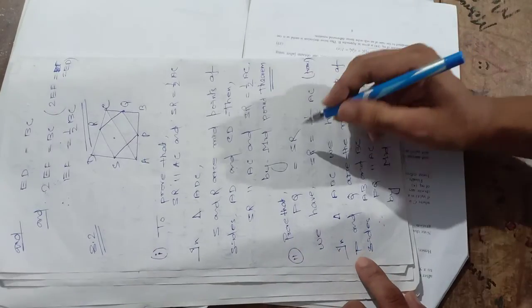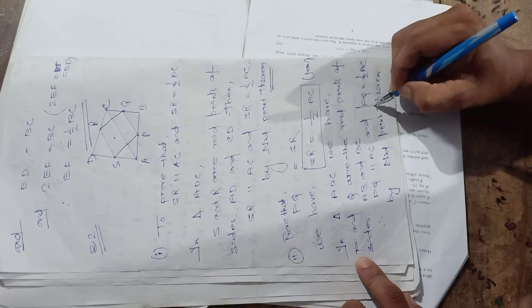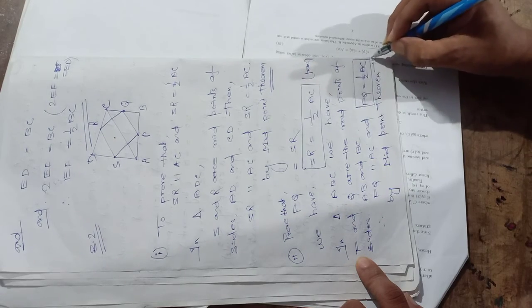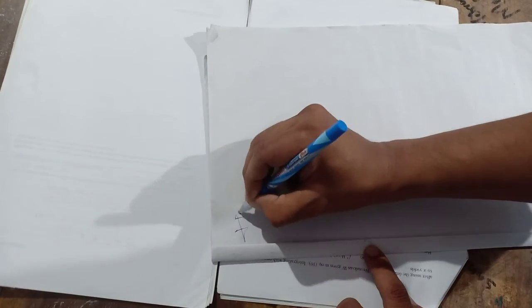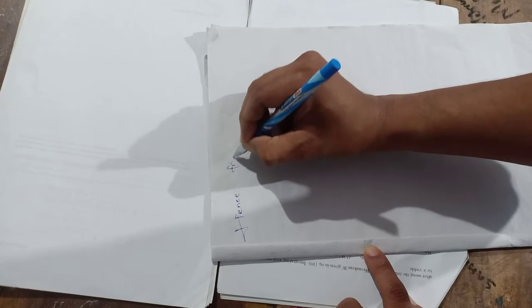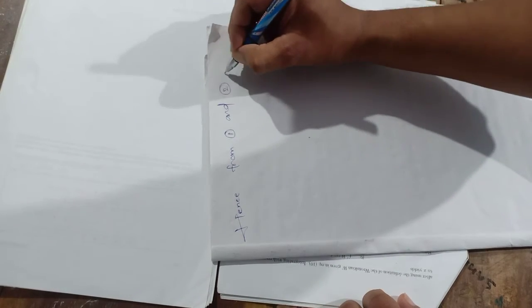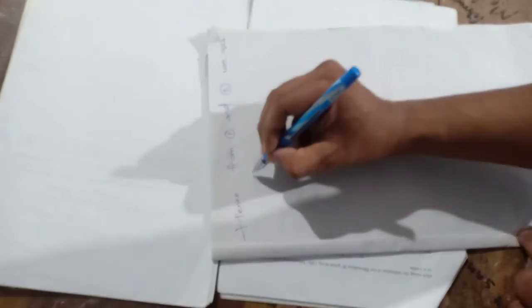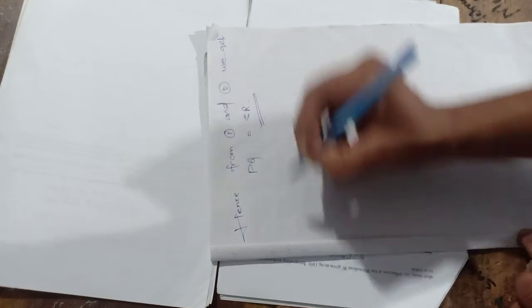So students, you can see that SR equals half of AC — this is equation one — and PQ equals half of AC — this is equation two. Hence, from equations one and two, we get PQ equals SR.